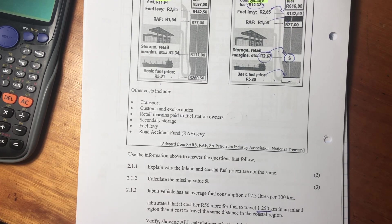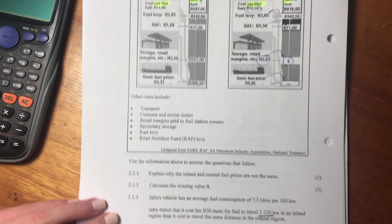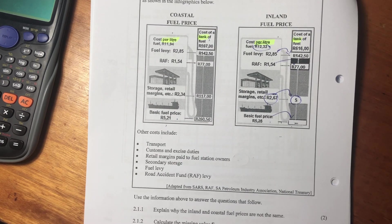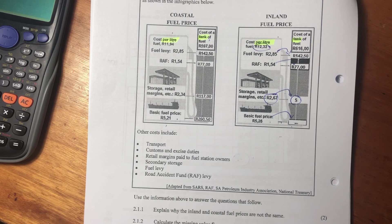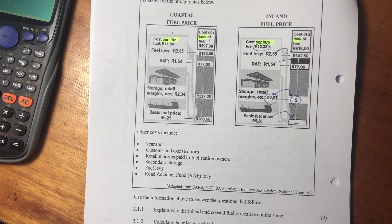So 2.1.1 says explain why the inland and coastal fuel prices are not the same. Let's think about this. This is a bit of an economic question because fuel is imported via harbors. Harbors are at the coast, so once the fuel comes to the coast, it's at its final destination. But now to bring it inland, there's an extra leg of transport. An extra leg of transport equals additional costs and that is why fuel inland is more expensive than fuel at the coast.